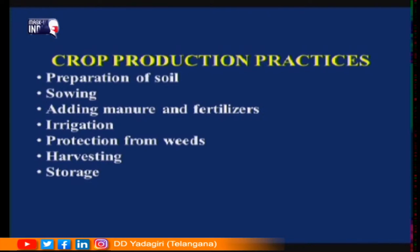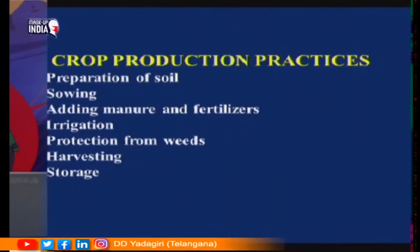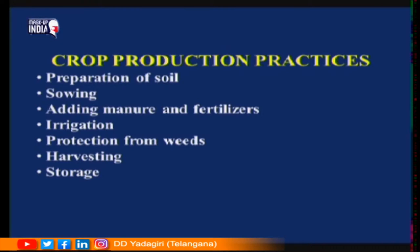We will discuss the steps followed for growing rice in agricultural land — crop production practices. Every crop requires some production practices or methods. These are: preparation of soil, sowing, adding manure and fertilizers, irrigation, protection from weeds, harvesting, and storage. Let us study each practice in detail.